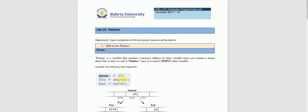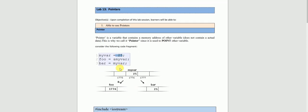Here we have another example: myvar is a variable which has 25 stored, and foo is a pointer variable. The ampersand symbol indicates an address, so foo = &myvar means foo stores the address of myvar. After that, bar = *foo, so the foo variable stores the address and bar dereferences it to get the value of myvar, which was 25.